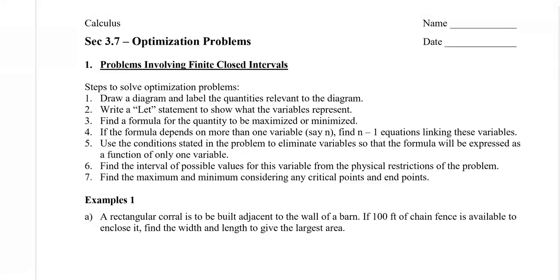To solve an optimization problem, I recommend drawing a diagram and labeling the quantities that are relevant. It's important to write a let statement to show what the variables are. Then find a formula for the quantity you want to maximize or minimize. As a rule of thumb, if the formula depends on n variables, you'll need n minus one equations linking those variables.